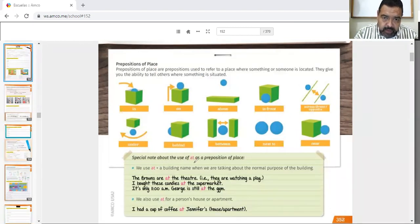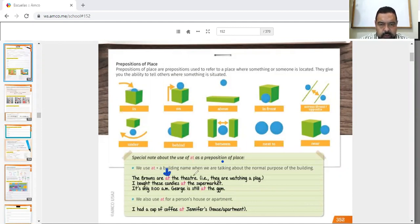So special note says right here. A special note about the use of at as a preposition of place. The Browns are at the theater. They are watching a play. The Browns is the last name of a family. Son Los Browns. Los López. Los Morales. The Browns are at the theater. You see que es un lugar público. It's a public place. That's why we can say at. I bought these candies at the supermarket. The supermarket is a public place as well. It's only 11 a.m. George is still at the gym. Another public place. So he didn't say in the gym, in the supermarket, in the theater, but can be.